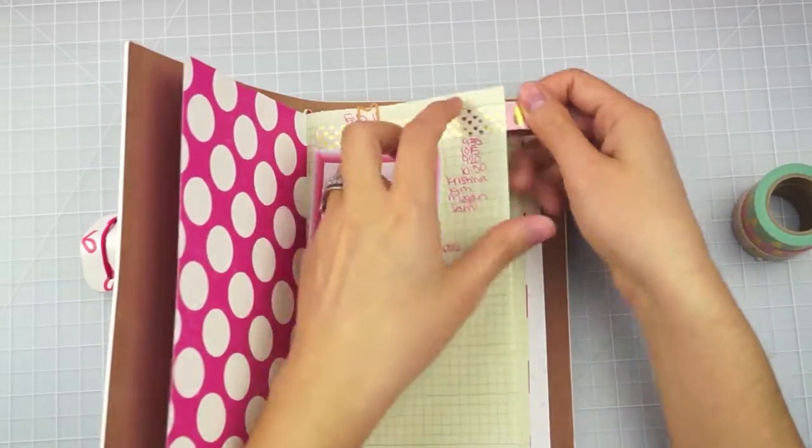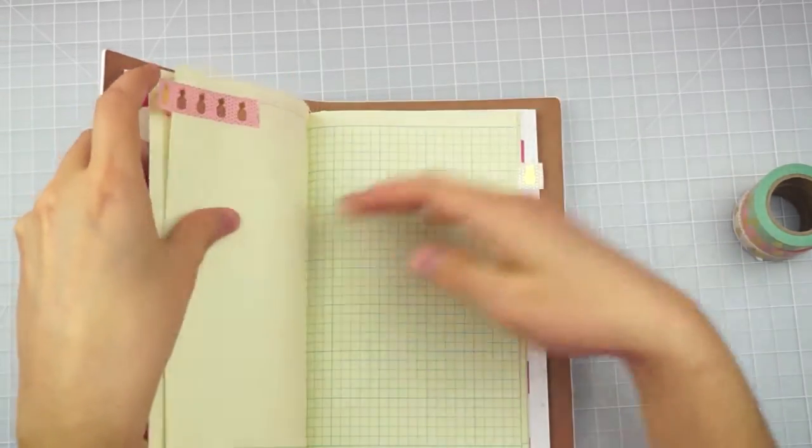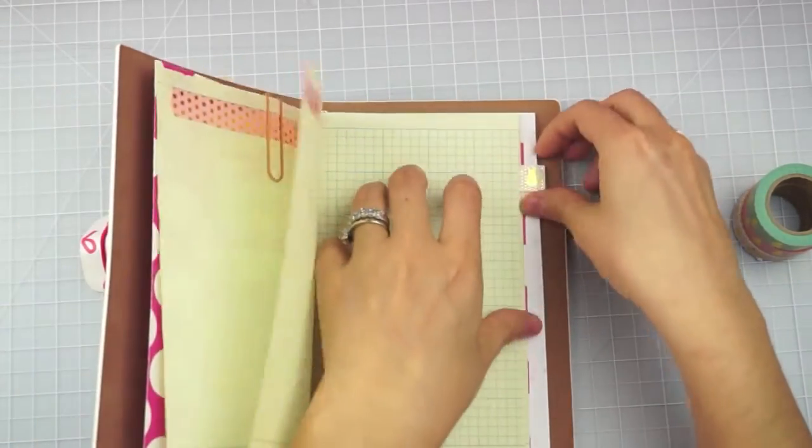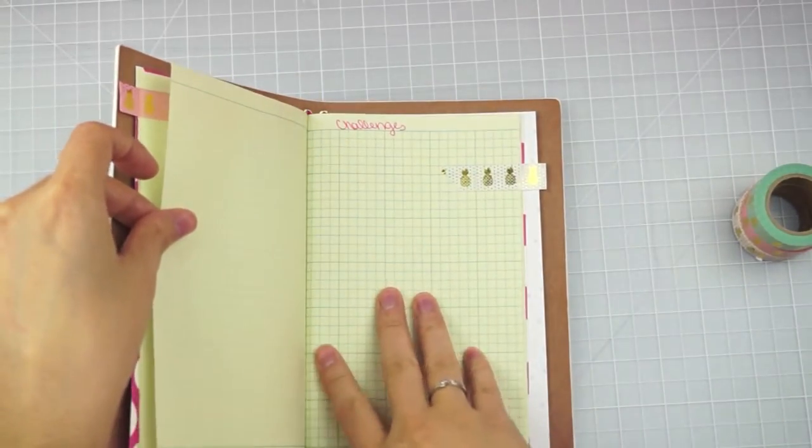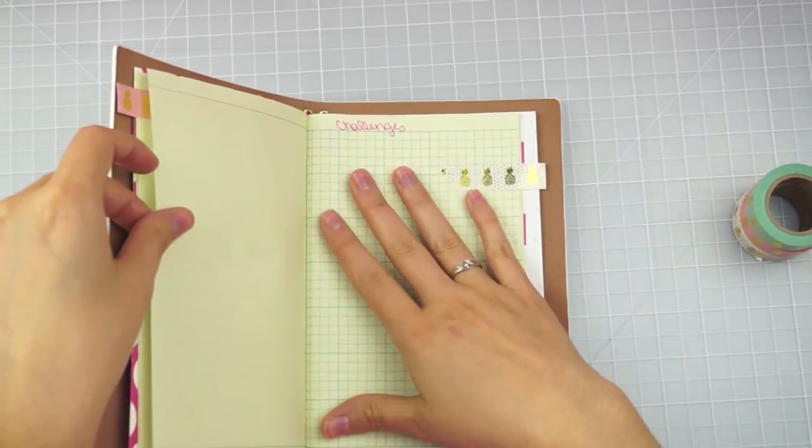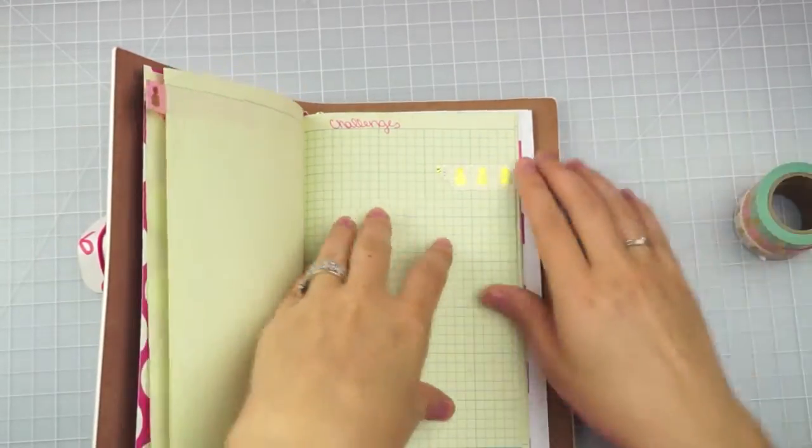So I made a little pink tab. I just plan on putting video ideas on that one. And then I also made a little white tab here that I'll put challenges. I want to start participating in more challenges. I'm just trying to get scrapbooking more and so I want to participate in more challenges. And so I made a tab for that.